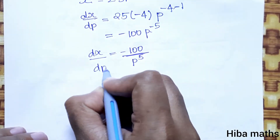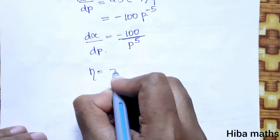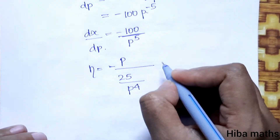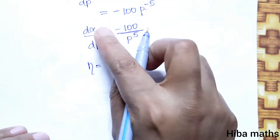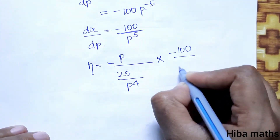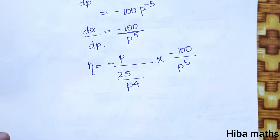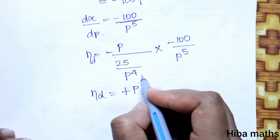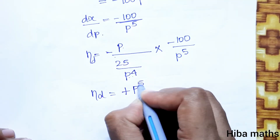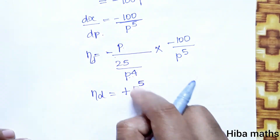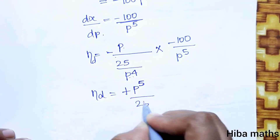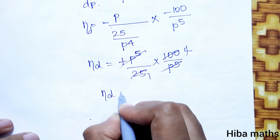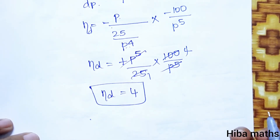Now substituting into the elasticity formula: eta d equals minus p by x, where x is 25 by p power 4, multiplied by dx by dp which is minus 100 by p power 5. The two negatives give a positive. Simplifying: p power 1 times p power 4 gives p power 5 in the numerator, which cancels with p power 5 in the denominator, and 100 divided by 25 equals 4. Therefore, eta d is equal to 4.